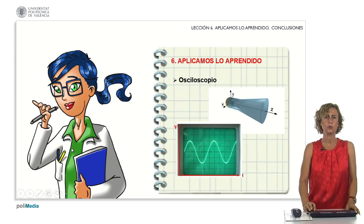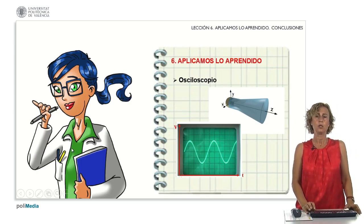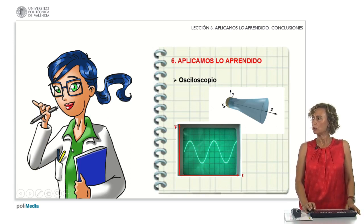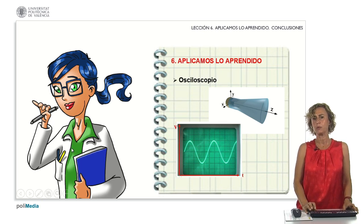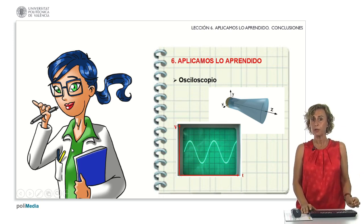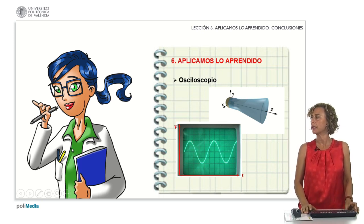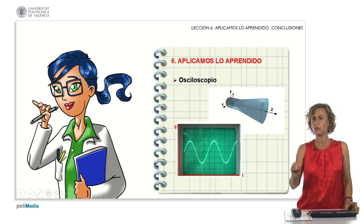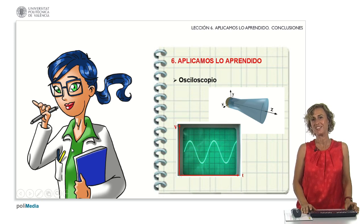What have we seen in this class? We've seen an analog oscilloscope that has a cathode ray tube, and we've observed that the deflection depends on the applied electrostatic field. The oscilloscope is a measuring device that allows us to visualize voltage signals as a function of time. That's all — see you in the next class.